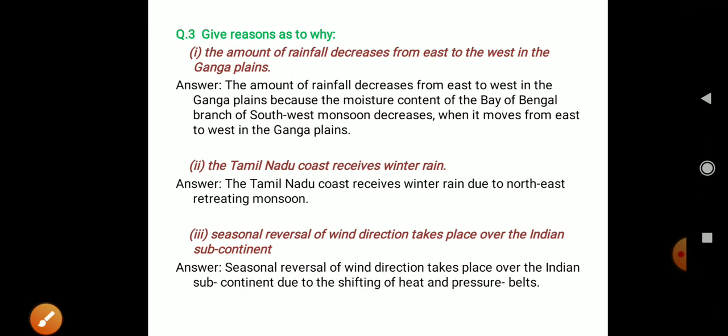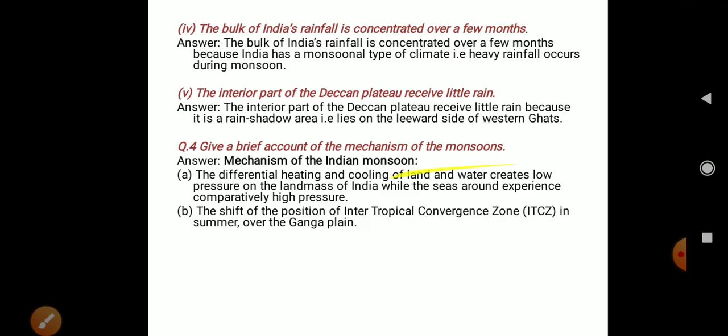The interior part of the Deccan Plateau receives little rain because it is a rain shadow area — that is, it lies on the leeward side of the Western Ghats.